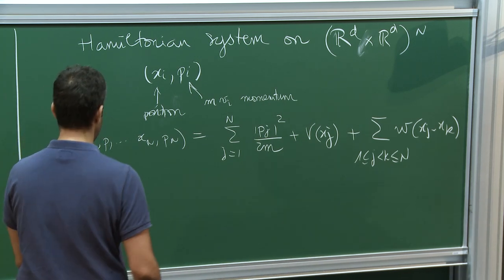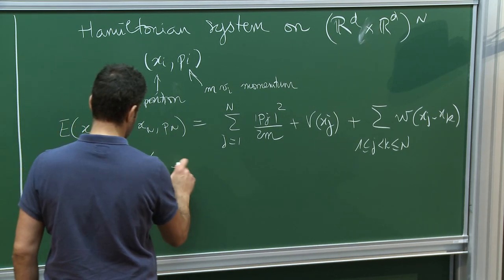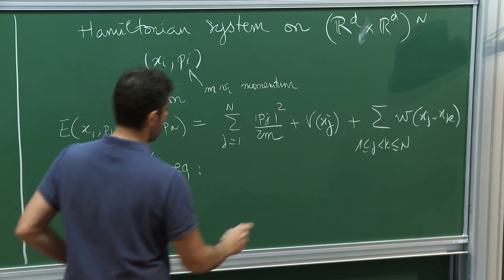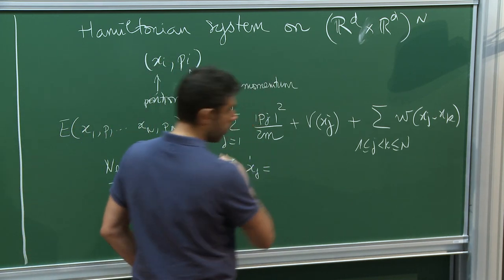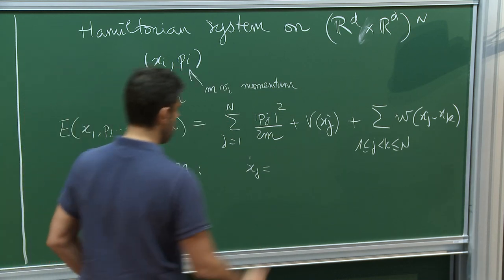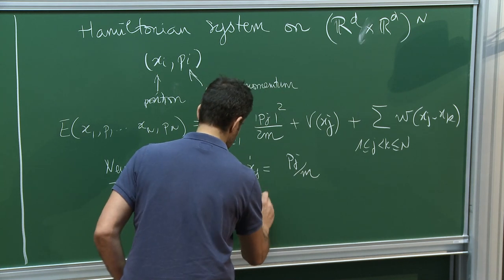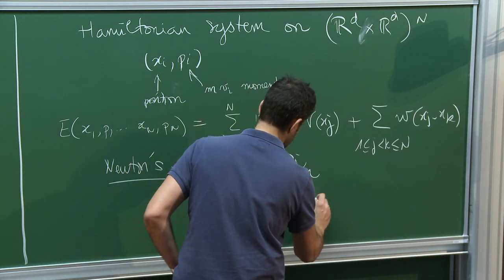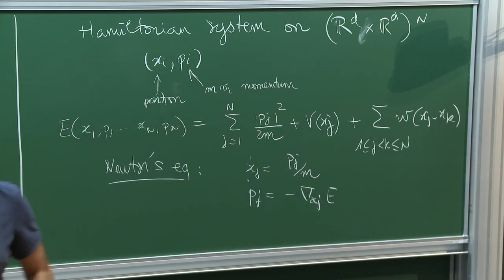The dynamics is given by Newton's equations: ẋ_j equals the derivative of the energy with respect to p_j, giving p_j divided by m, and ṗ_j equals minus the gradient with respect to x_j of E. So you have lots of coupled ODEs, and the energy is, of course, conserved.